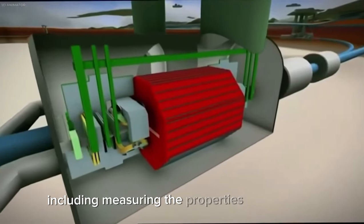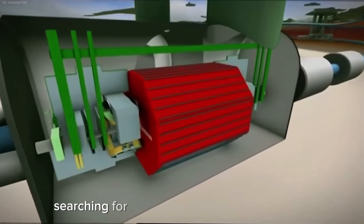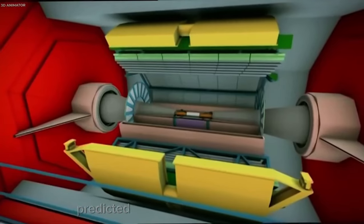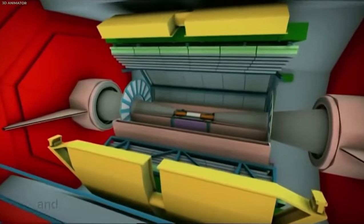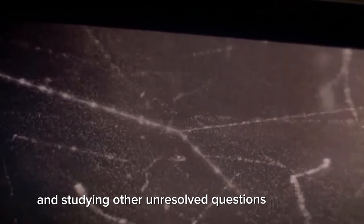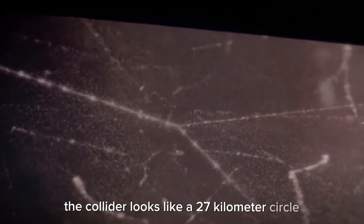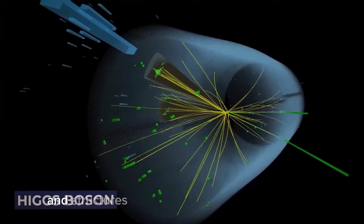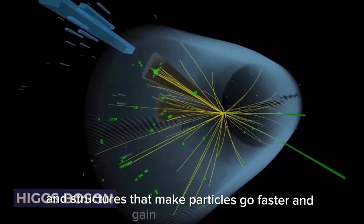The goal of this particle accelerator is for physicists to test the predictions of different theories of particles, including measuring the properties of the Higgs boson, searching for the large family of new particles predicted by supersymmetric theories, and studying other unresolved questions in particle physics. The collider looks like a 27-kilometer circle that is made of strong magnets and structures that make particles go faster and gain more energy.